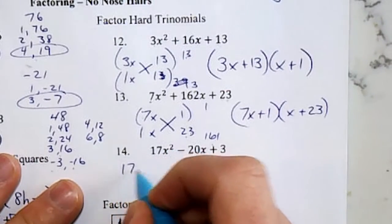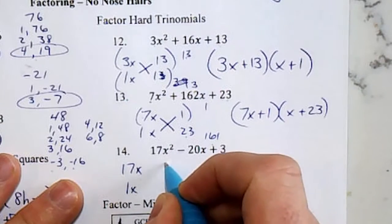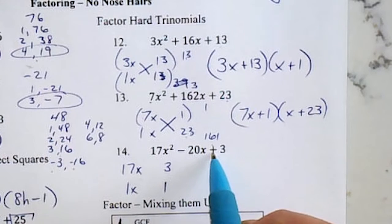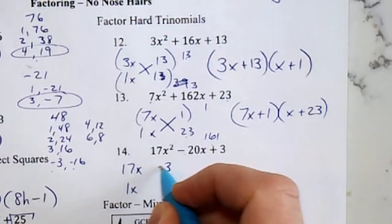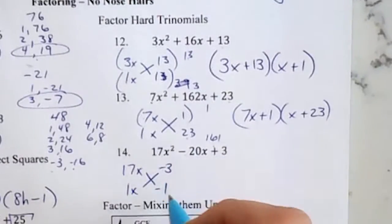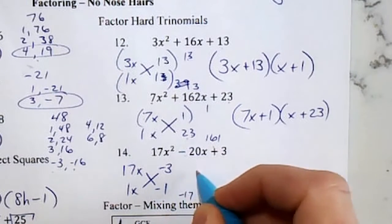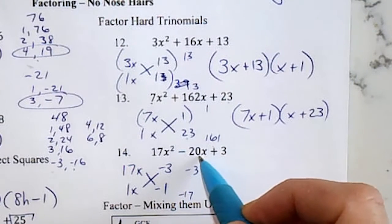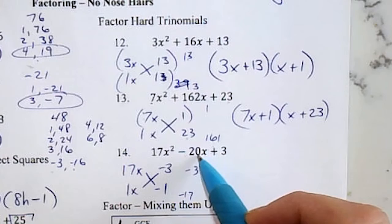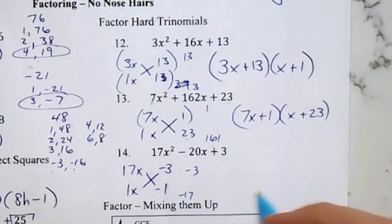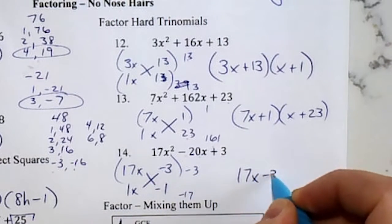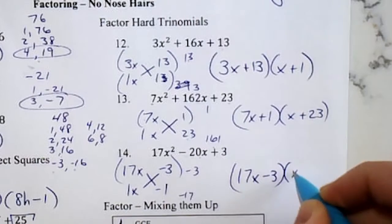17 is prime. Got 3. And I can see right away, they multiply to positive, but I need negatives. So I'm going to make both of them negative. So if I do this one, I get negative 17, negative 3, and I'm right on the first one, negative 20. So if the signs are wrong, just switch the signs. If the number's wrong, switch the place they're in. So my first one, 17x minus 3, x minus 1.